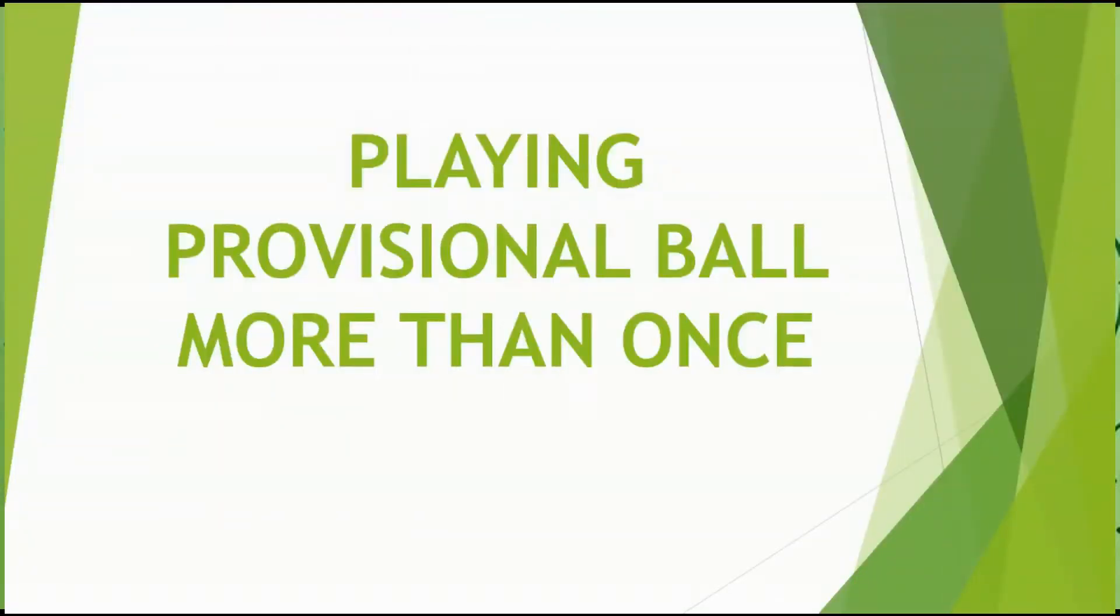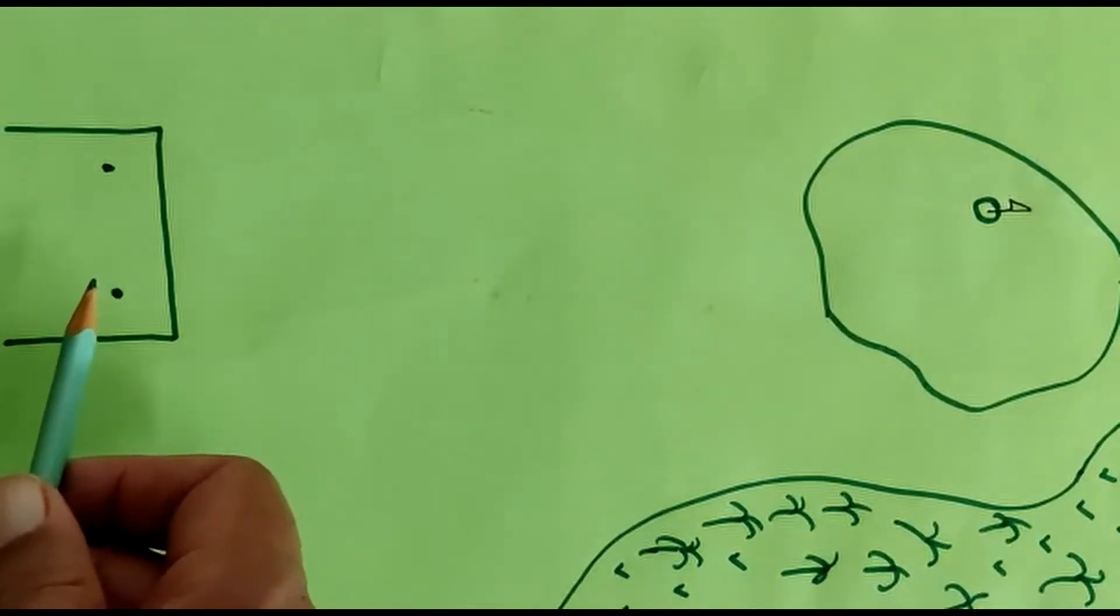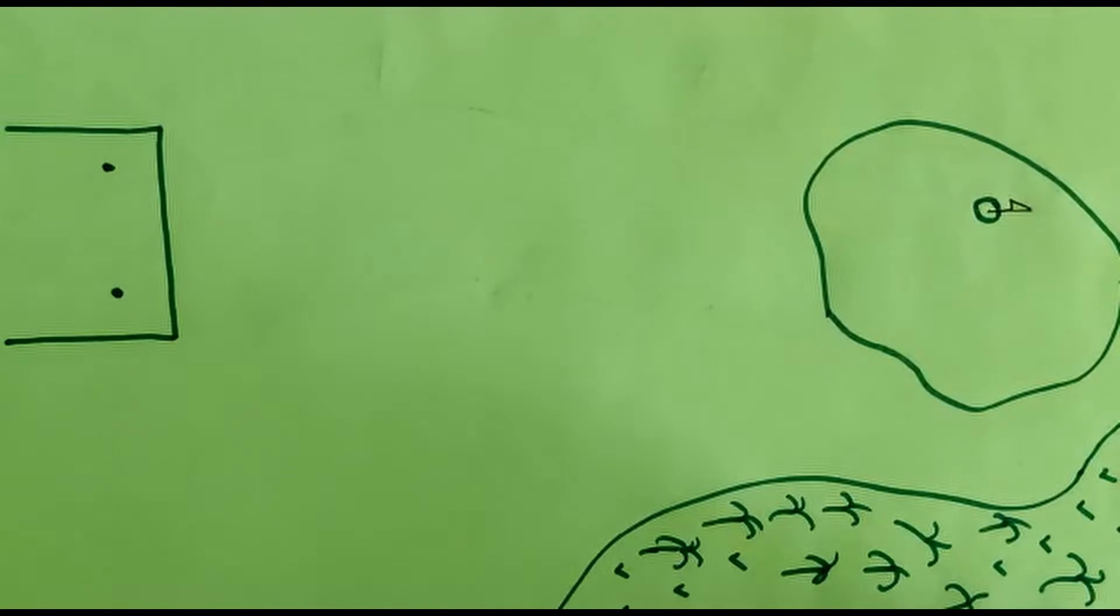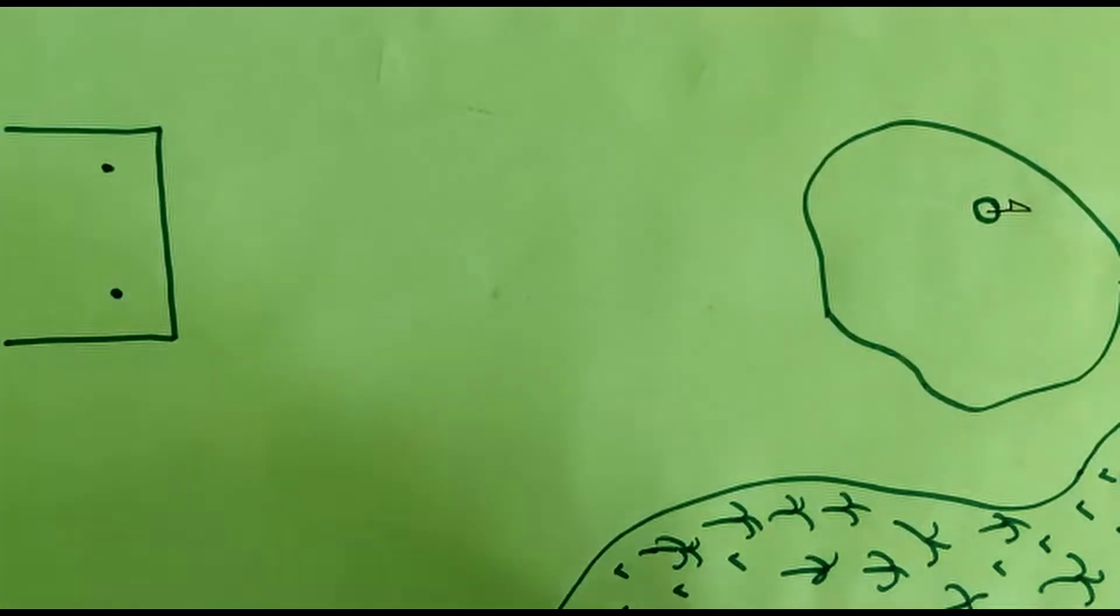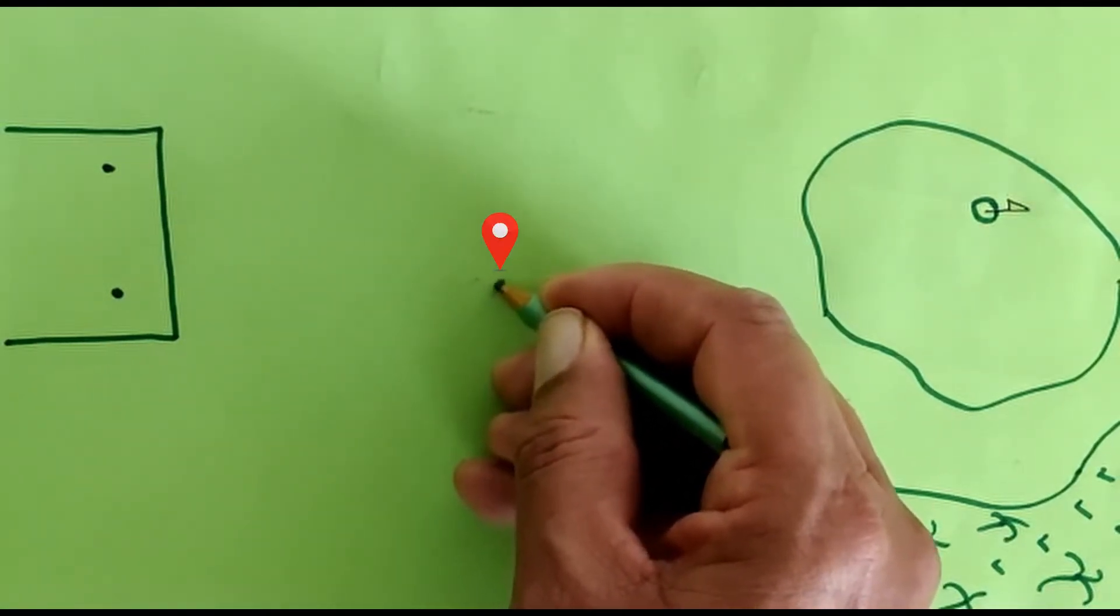Playing provisional ball more than once. A player plays a ball from the tee area and hits it approximately 250 yards in the general area of out of bounds. He hits a provisional ball from the tee which goes about 170 yards maybe at this spot.